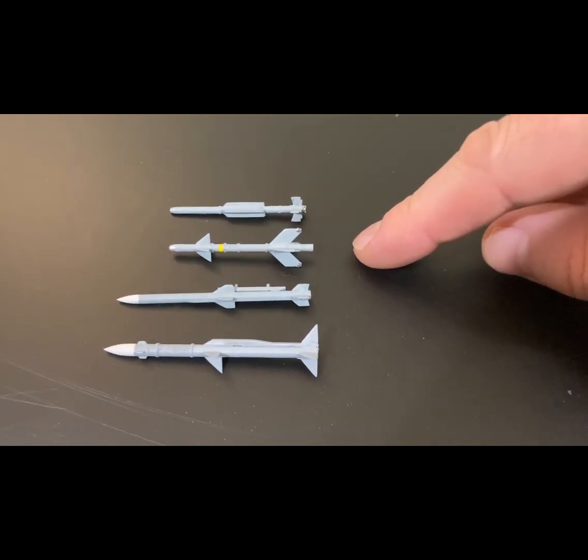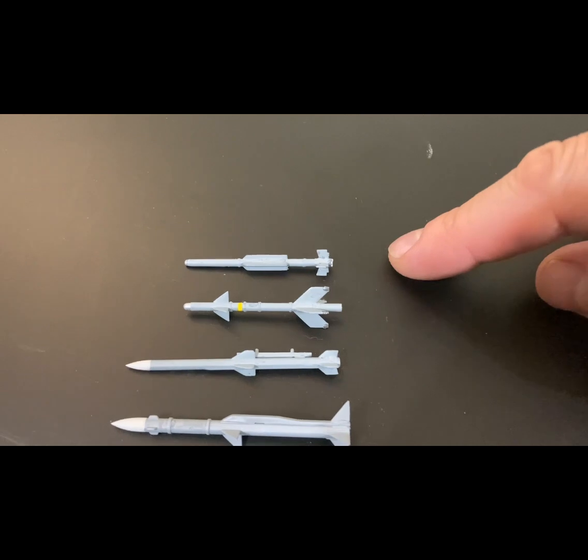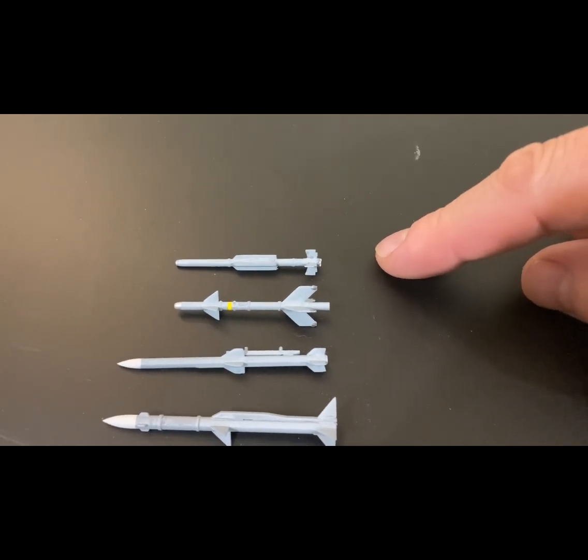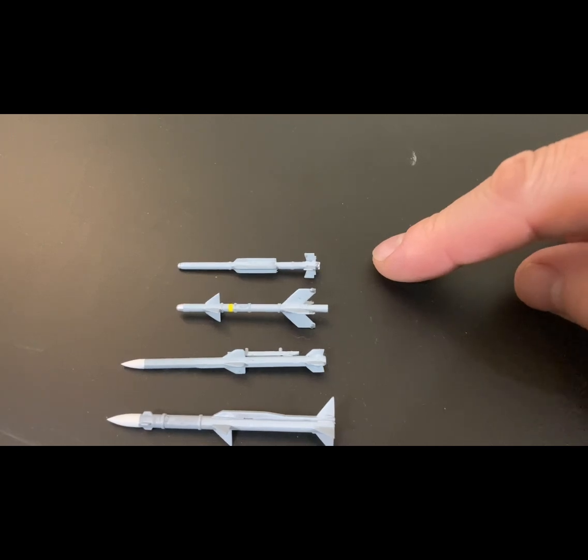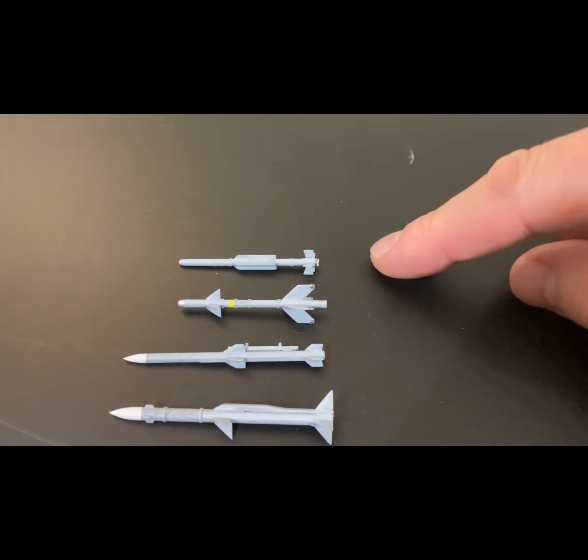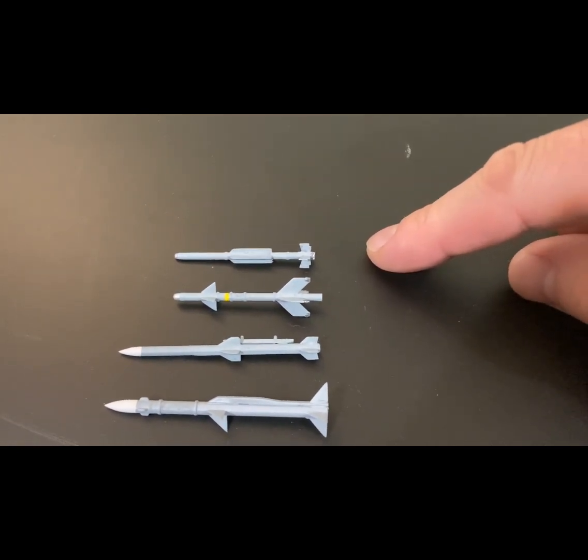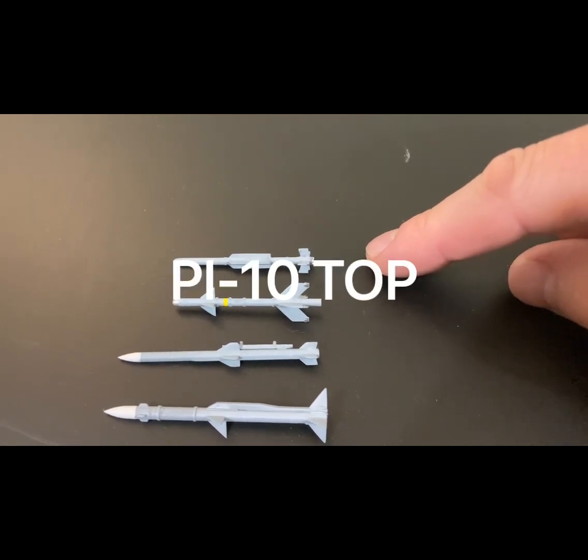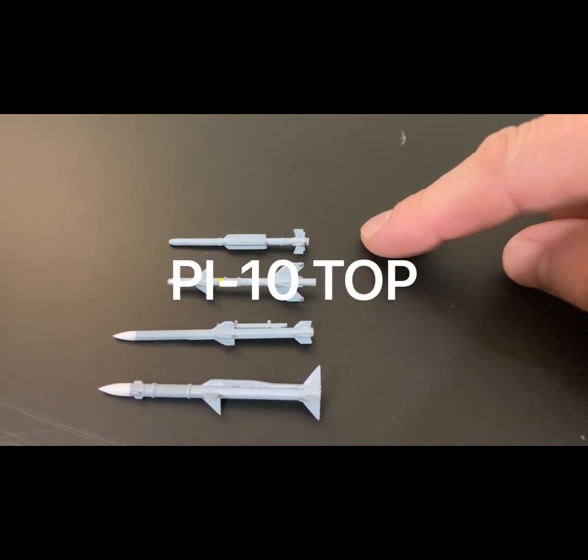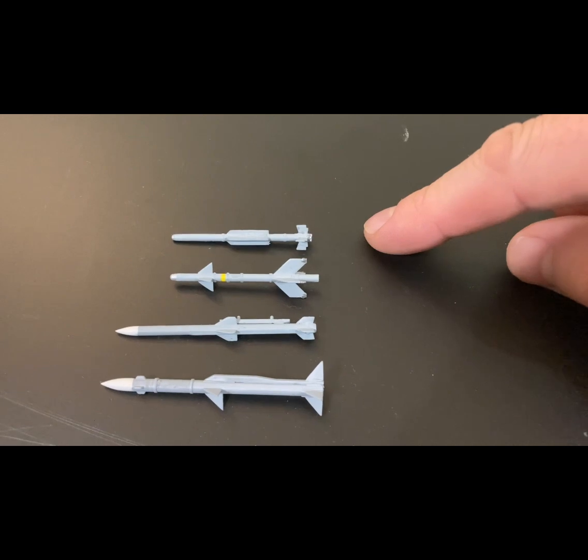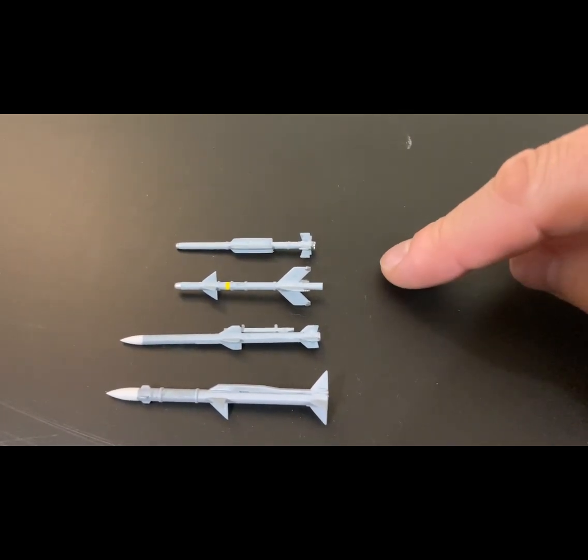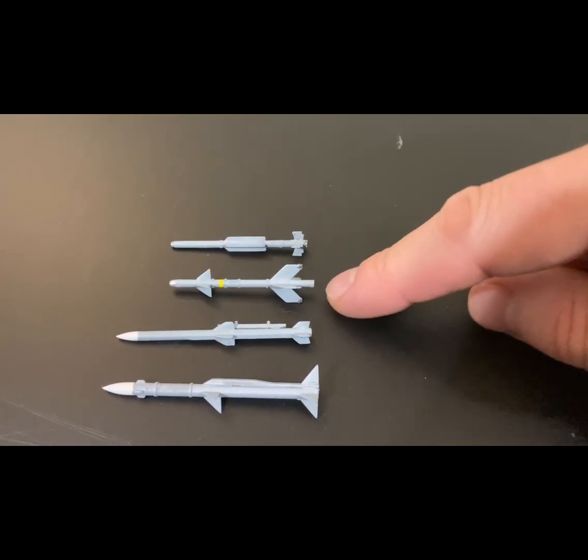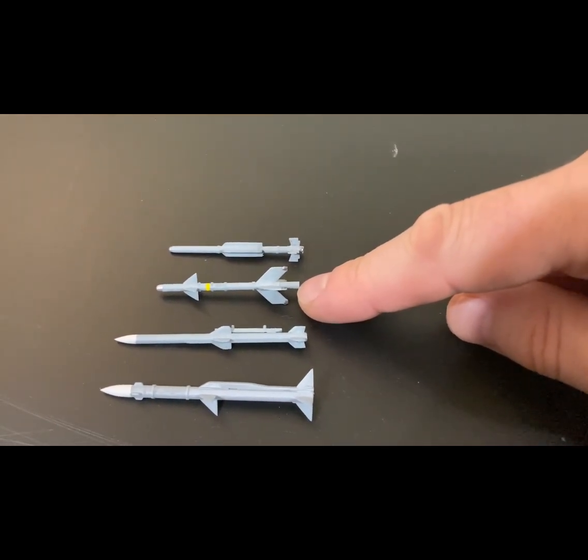Its successor is the PL-10. This uses lessons from the IRIS-T which gives around 40 G of pull, and it can be launched pretty much at any angle, even targeting targets behind it using a helmet-mounted sight. So that's the PL-10 and PL-8, Python 3 and PL-10. These are my main short-range air-to-air missiles used on my Chinese and Russian-made jets.